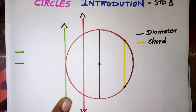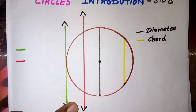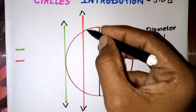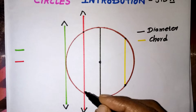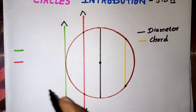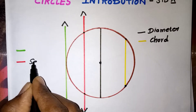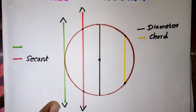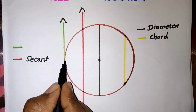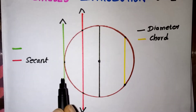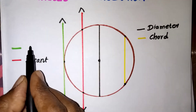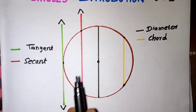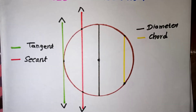Here we have two different lines — a red line and a green line. The red line passes inside through the center and touches the circle at two different points; this red color line is called a secant. The green color line touches the circle at exactly only one point — that line is called a tangent.